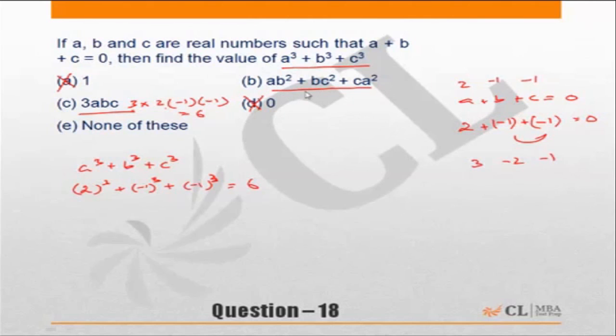this one, ab²+bc²+ca²? Let's look at this particular choice. ab² is 2×(-1)² plus bc² is (-1)×(-1)² plus ca² is (-1)×2². So this becomes 2×1 plus (-1)×1 plus (-1)×4. This becomes 2-1-4=-3.